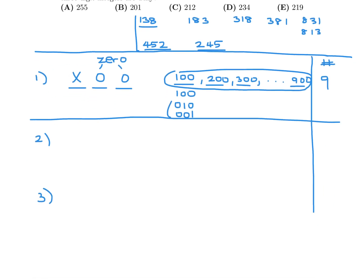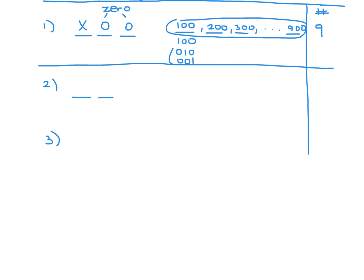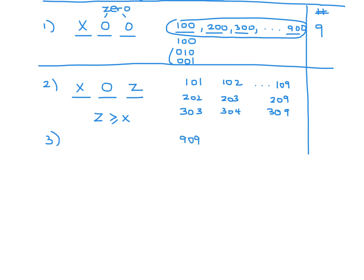The next type has the form X0Z, where X is some digit, 0 is in the middle, and Z is non-zero with Z greater than or equal to X. For example, 101 through 109, then 202 through 209, 303 through 309, and so on, with the last row being 909. These all qualify as tiny — when you rearrange them, you can't get a smaller three-digit number. For the 100s we get 9, for the 200s we get 8, for the 300s we get 7, all the way down to 1. So 1+2+3+...+9 = 45.